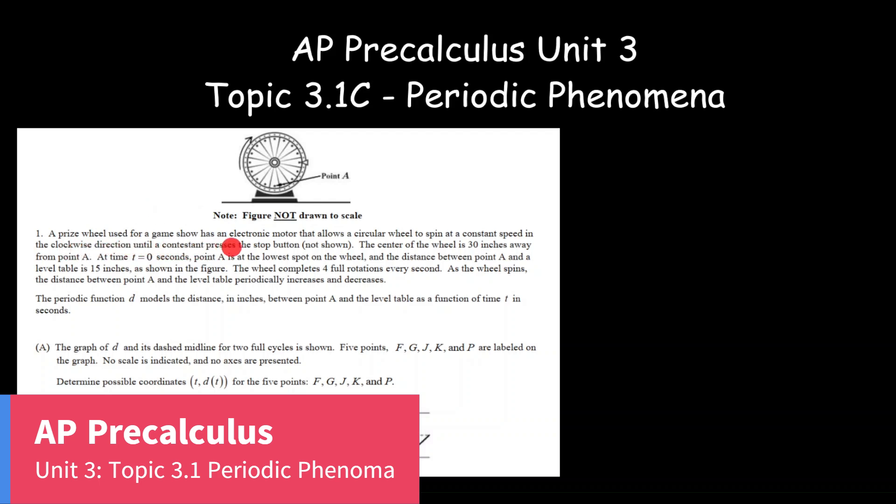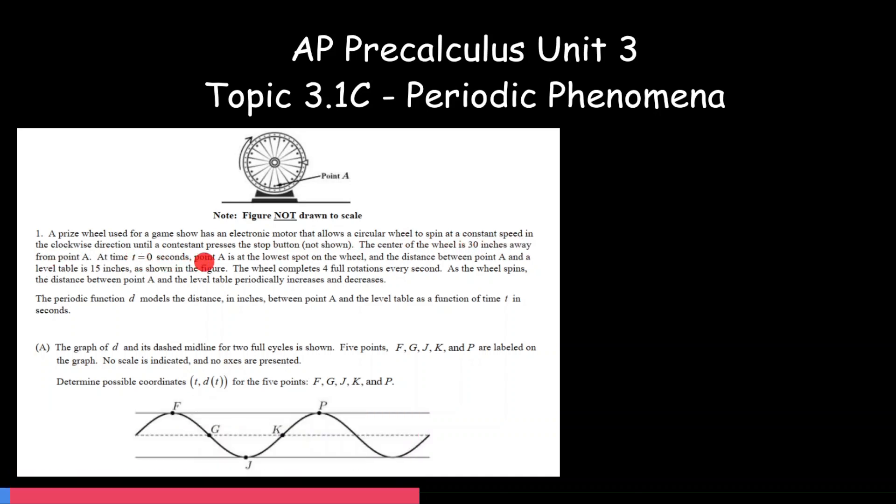A prize wheel used for a game show has an electronic motor that allows a circular wheel to spin at a constant speed in a clockwise sense until a contestant presses the stop button. The center of the wheel is 30 inches away from point A, and at time t equals 0, A is the lowest point on the wheel, and the distance between point A and the label table is 15 inches.